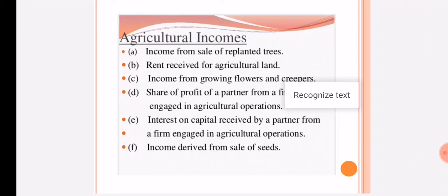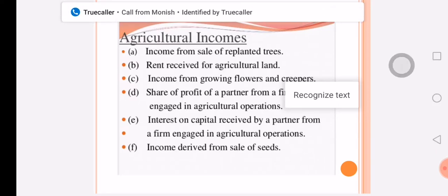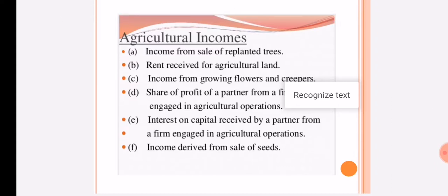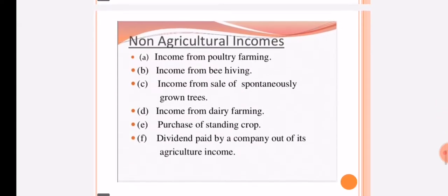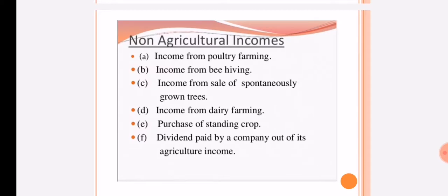The interest on capital received by a partner from a firm engaged in agricultural operations is non-agricultural income. Also, income derived from the sale of seeds is treated as non-agricultural income.